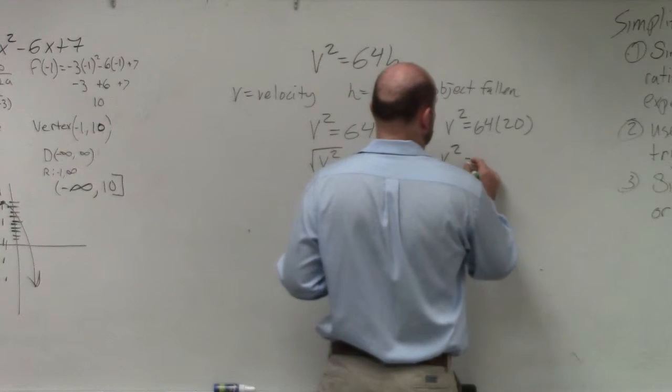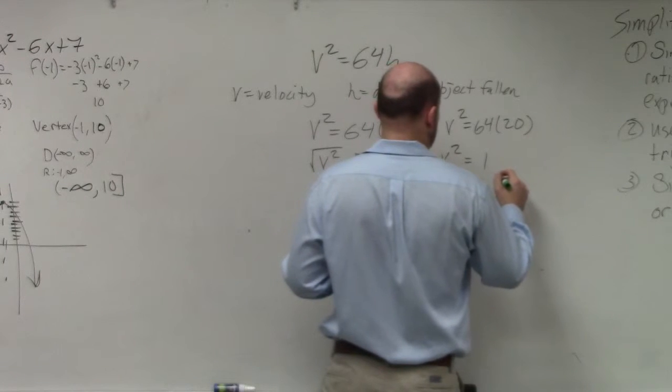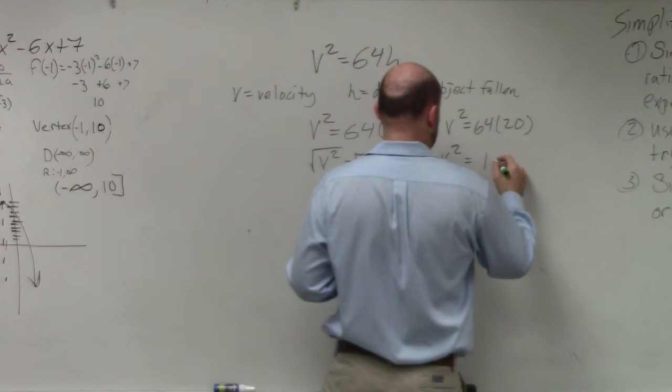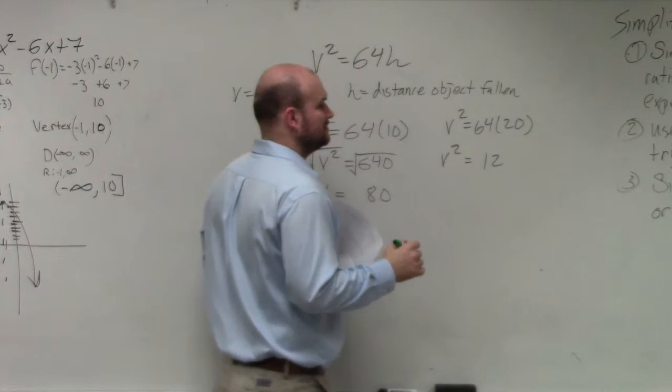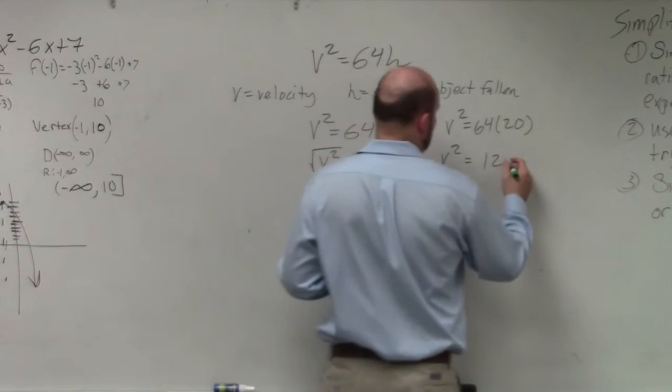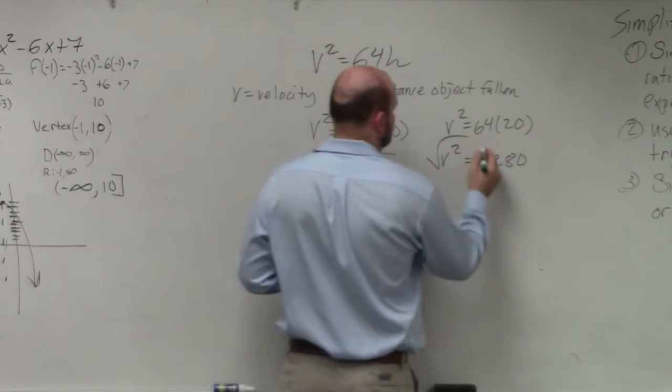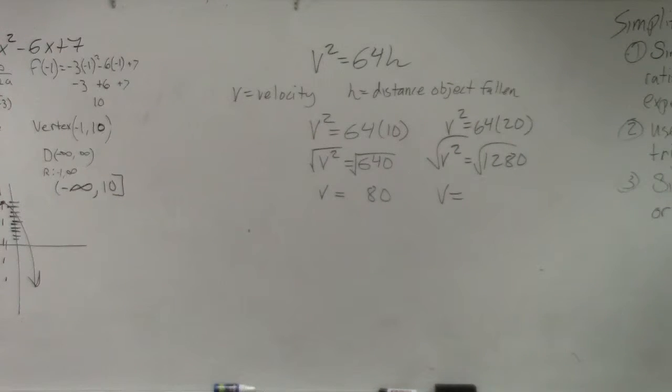So let's see what happens. v squared equals 1,280, right? Now I need to take the square root. Now I am not going to be able to do that in my head, so let's see what this is. 35.77.